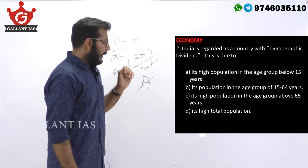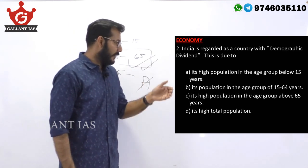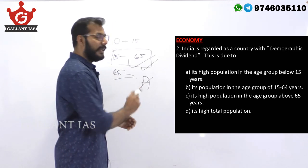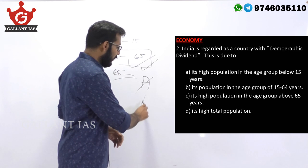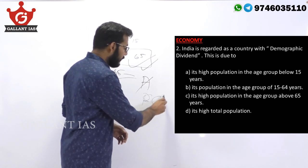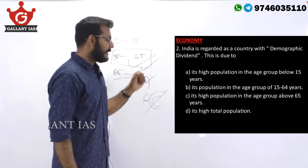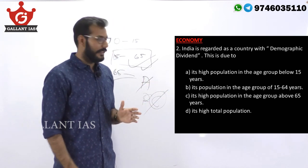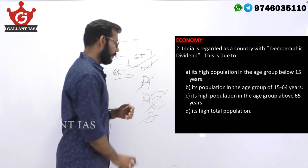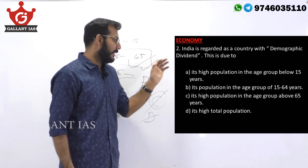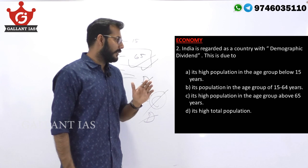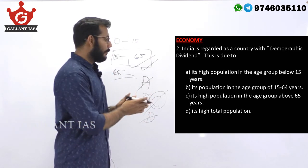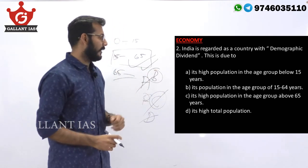Option C states high population in the age group above 65 years. Again, above 65 is the dependent population, so C cannot be your answer. Option D states high total population — high total population is not demographic dividend, so D is also wrong. Option B states population in the age group of 15 to 64 years — that is the right answer. B is your correct answer.